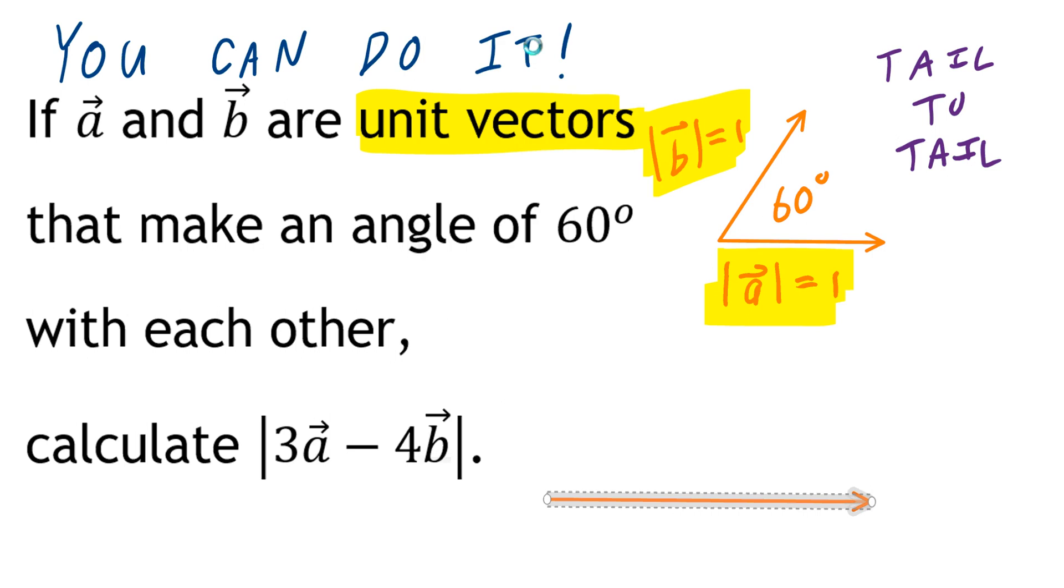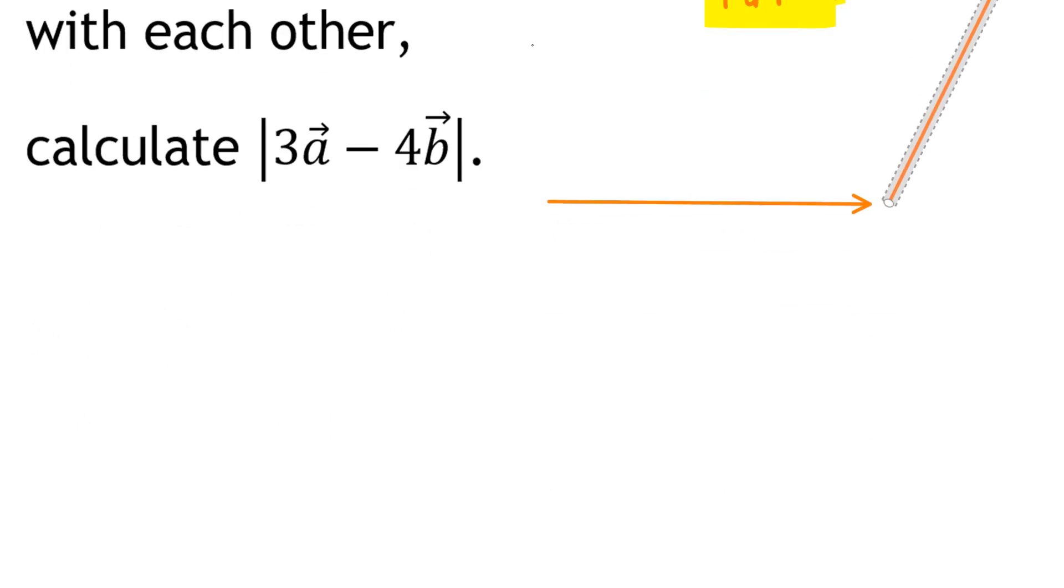When you think about the second vector, which is going to be 4 times vector B, the key is this. You're taking 3A minus 4B, not 3A plus 4B, which would be something like that. Let's show you the opposite of this.